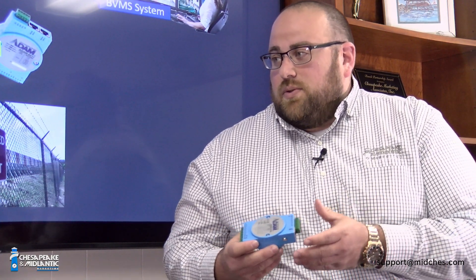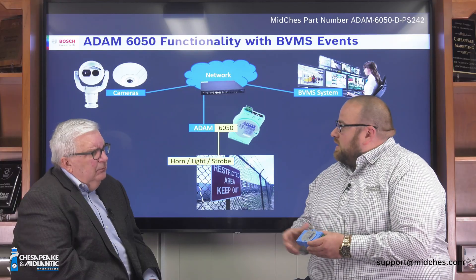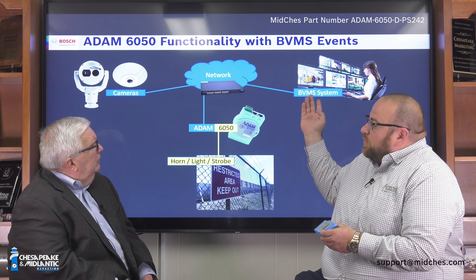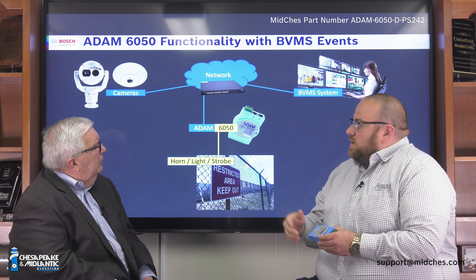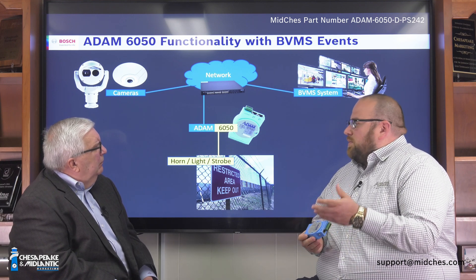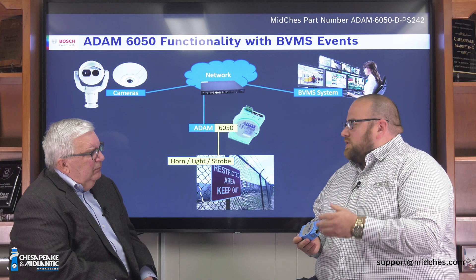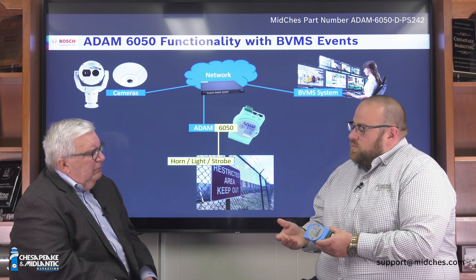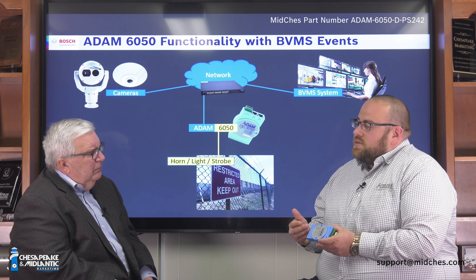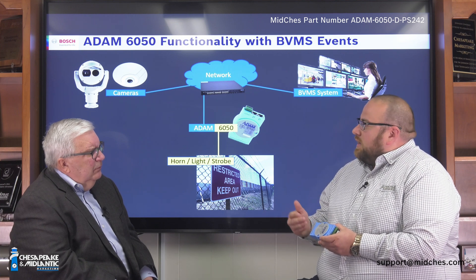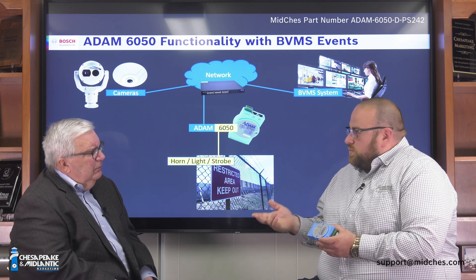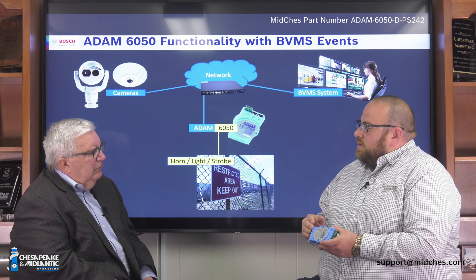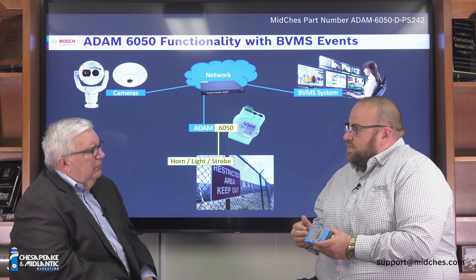Traditionally, what we were doing is taking one of these for an existing analog system — we would feed inputs, which would then come in front of the operator and call up video from your PID system, which is your perimeter detection system or anything like that. In this situation, what we're doing is kind of the opposite, where we're going to take analytical rules or motion rules from a camera and then produce a physical relay off of this unit.